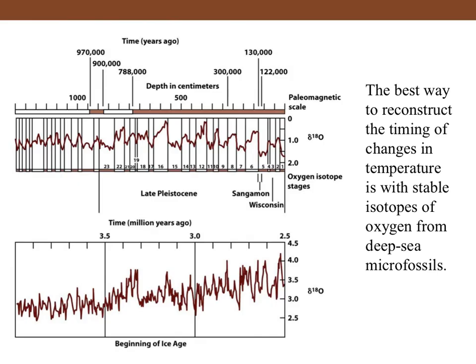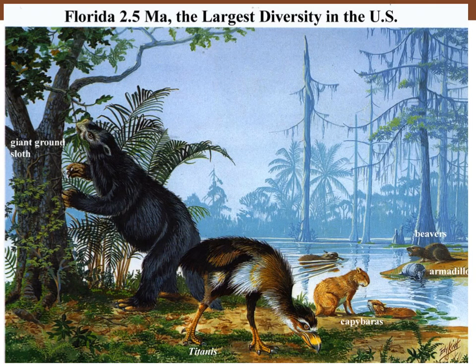Even though you can reconstruct vegetation from pollen, Dr. Lori Collins says the best way to reconstruct the timing of temperature changes is with stable isotopes of oxygen from deep sea microfossils, and that's what these diagrams show. I'll end with an artist's conception of what Florida would have looked like two and a half million years ago, which had the greatest diversity in the United States — a variety of vertebrates as well as plants, gymnosperms and angiosperms in this picture.